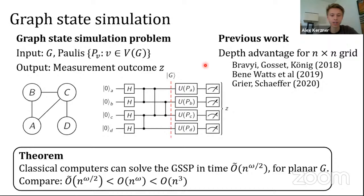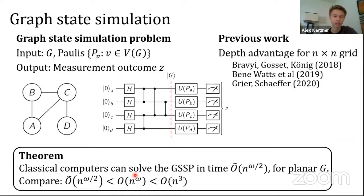The result we show is that a classical computer can solve the graph state simulation problem in gate complexity n^(ω/2) when the graph is planar. If you wanted to do this with just standard Clifford simulation, you'd incur a cost of n^ω, so what we have is a quadratic improvement on that.